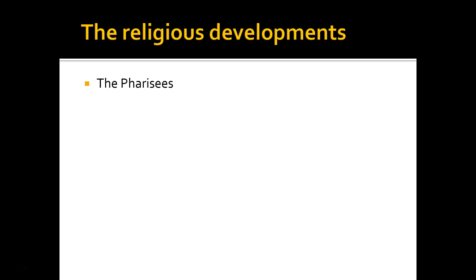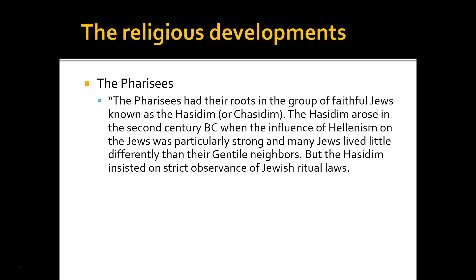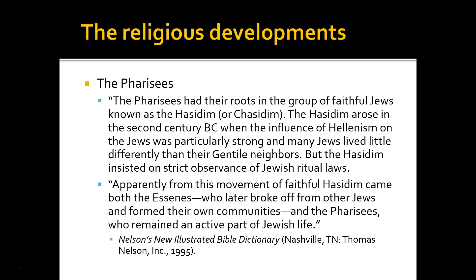We also have the Pharisees rising to prominence during this period — obviously very dominant during the days of the Gospels, during the life of Christ. It was during this intertestamental period that the Pharisees came into existence. They had their roots in a group of faithful Jews known as the Hesidim, or Chasidim. The Hesidim rose in the 2nd century BC when the influence of Hellenism on the Jews was particularly strong, and many Jews lived little differently than their Gentile neighbors. But the Hesidim insisted on strict observance of Jewish ritual laws. Even today, you will find Hasidic Jews who try and follow the law closely. From this movement came both the Essenes, who later broke off and formed their own desert communities, and the Pharisees, who remained an active part of Jewish life.